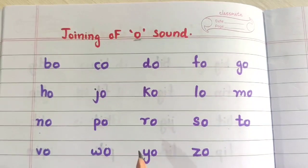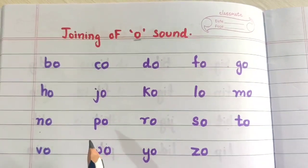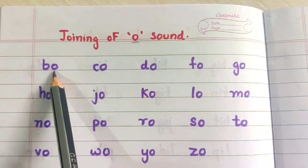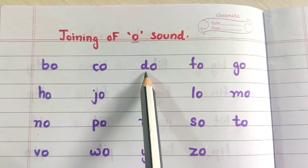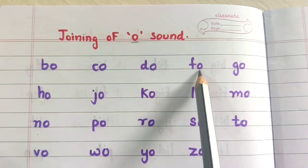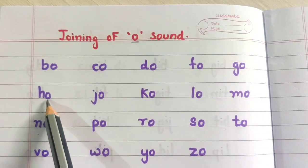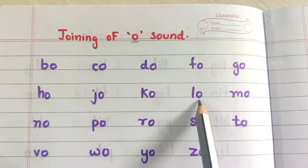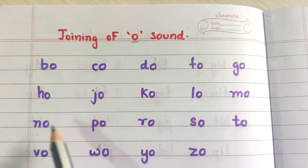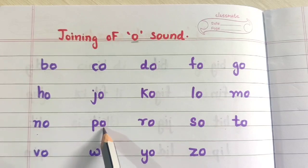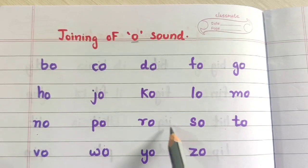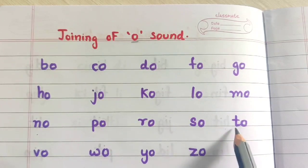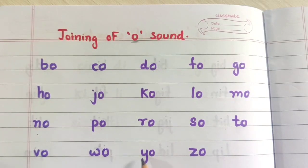Now let's do the words again children. You also repeat with me. Bo, Ko, Do, Fo, Go, Ho, Jo, Ko, Lo, Mo, No, Po, Ro, So, To, Vo, Vo, Yo, Zo.